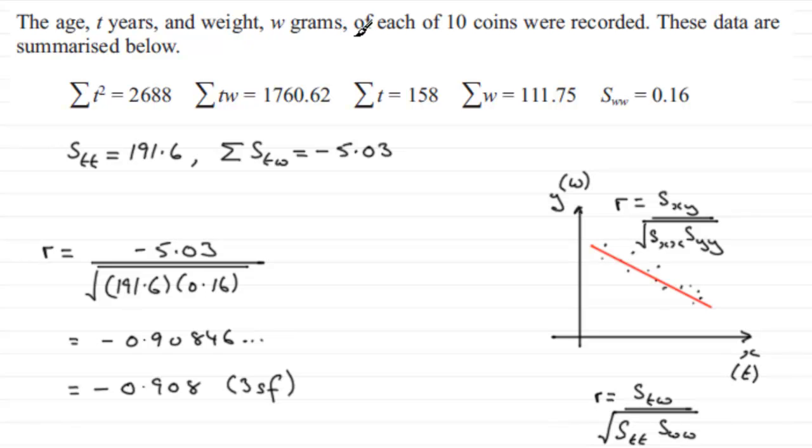As it gets older, more of the surface, I'm sure, is going to be rubbed off. And there'll be chips in the coin as well. So there you go. There's the product moment correlation coefficient. So I hope that's given you some idea and a little bit of background here as well.